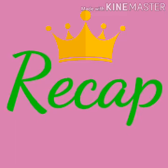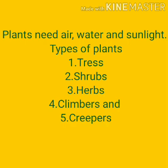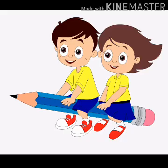Now, let's recap about plants. Plants need air, water and sunlight. Types of plants: Trees are big and strong plants. Shrubs are smaller than trees. Herbs are smaller than shrubs and have a soft stem. Climbers are weak plants that need support of other plants. Creepers are also weak plants that grow along the ground.